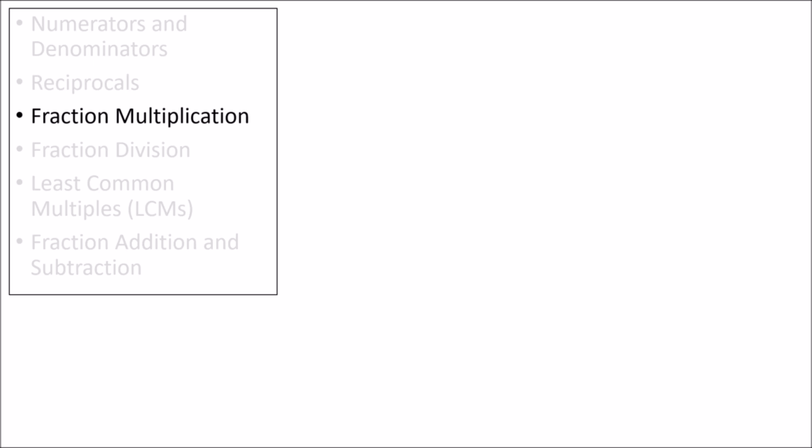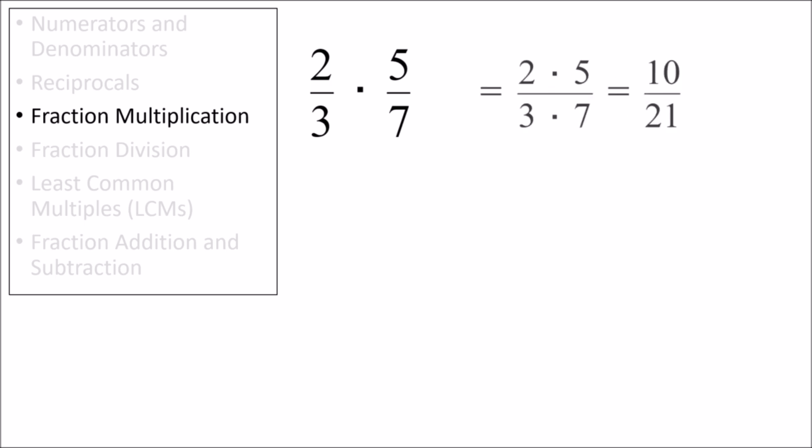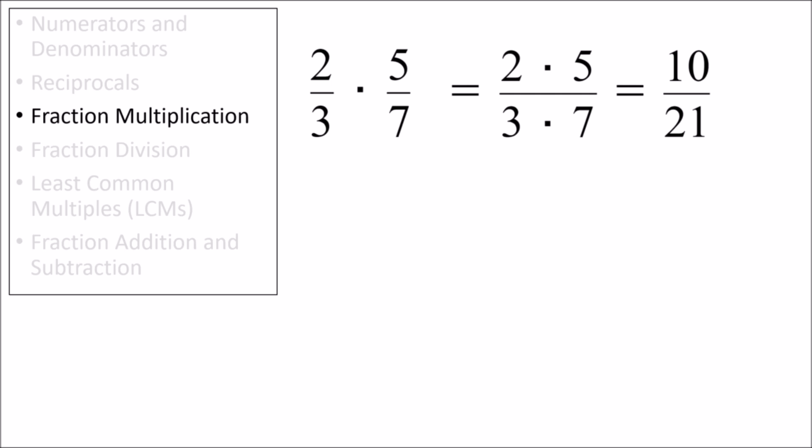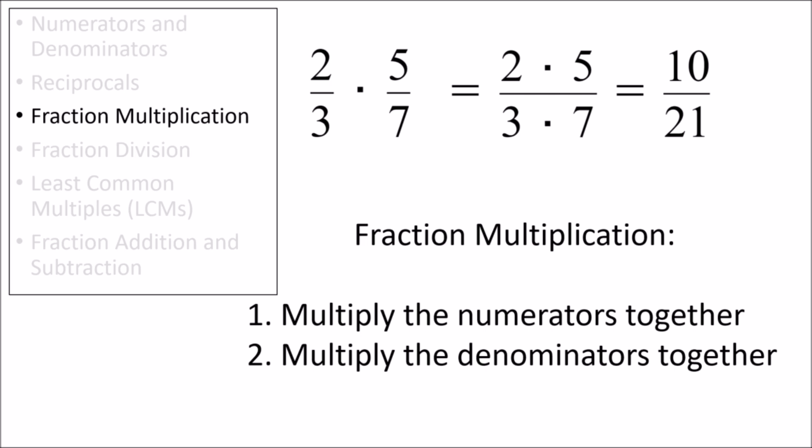Next, let's discuss how to multiply fractions. This ends up being the simplest arithmetic operation between fractions. Here we have 2 thirds multiplied by 5 sevenths. To multiply these two fractions, we multiply the numerators together and the denominators together. So 2 thirds multiplied by 5 sevenths is 10 over 21. To multiply fractions, we just multiply the numerators together and the denominators together separately.